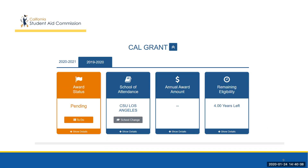For example, a student can expand the Cal Grant tab, which will show their award status, their current school of attendance, their annual award amount, and their remaining eligibility. It's also through this tab that a student could access information from last year's award.